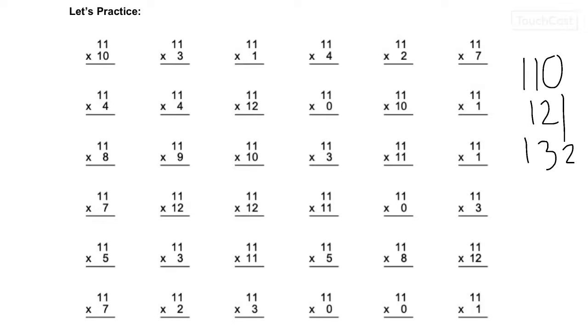So, 11 times 10 - this is one we just talked about, it's a little bit trickier - 110. 11 times 3, 33. 11 times 4, 44. 11 times 2, 77. 11 times 4, 44. This is the tricky one, that's 10, 11, 12. So, 132. 11 times 0, 0.